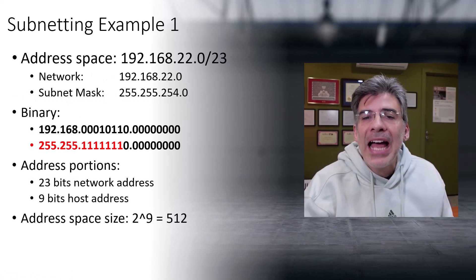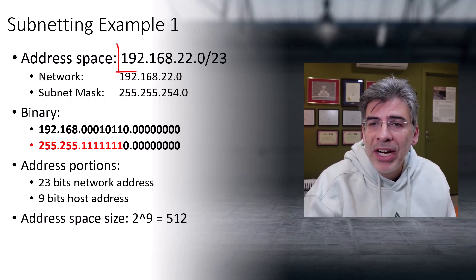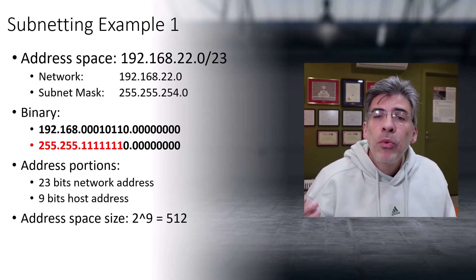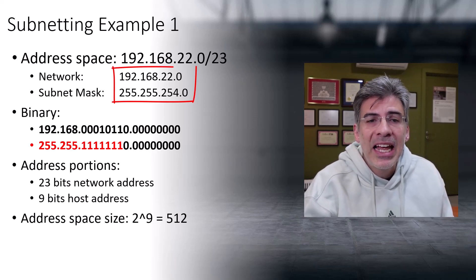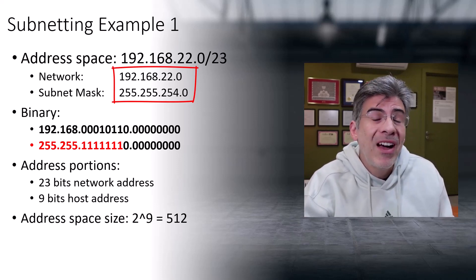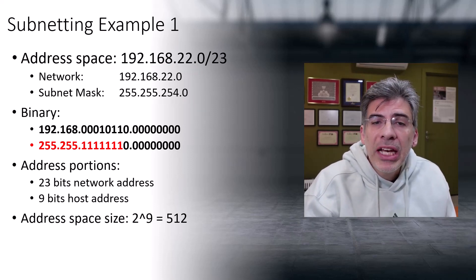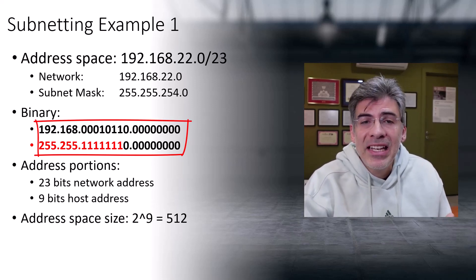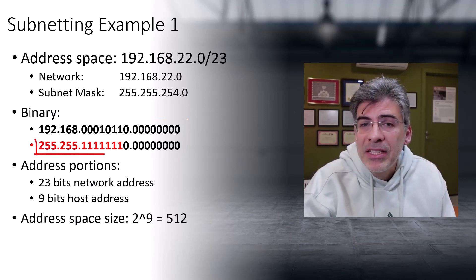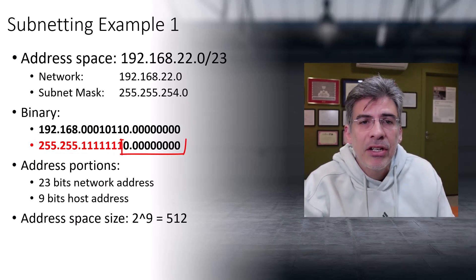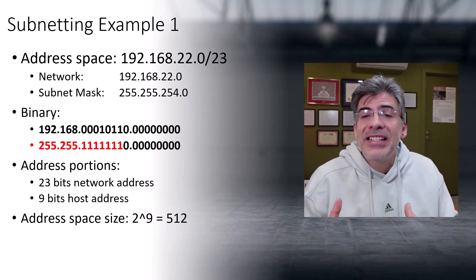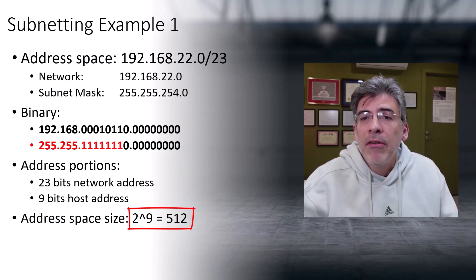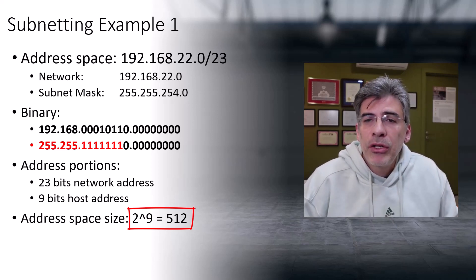Let's take a look at our original address space, 192.168.22.0/23, with the full subnet mask written out: 255.255.254.0. Representing the last two octets in binary, we can see that this subnet mask reserves 23 bits for the network address, and the last nine bits are defined as the host addresses. The total size of this address space is two to the power of nine, which gives us 512 addresses.